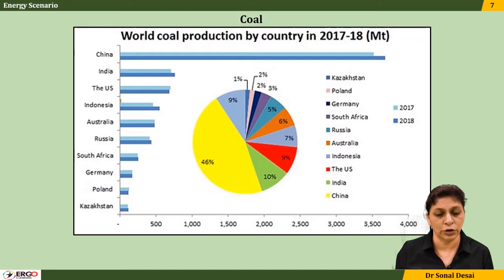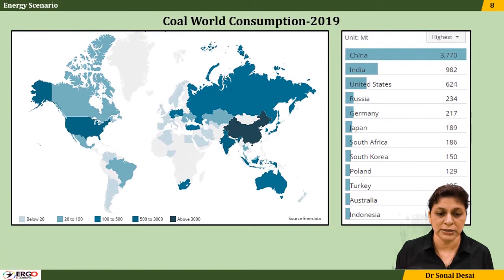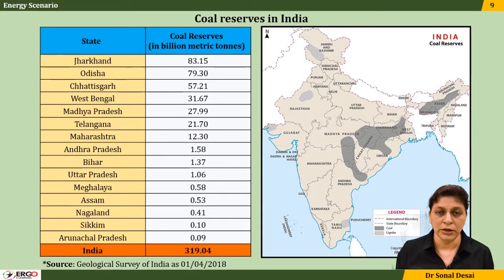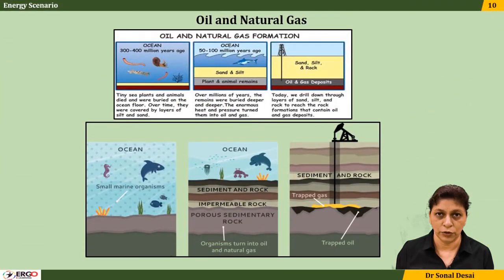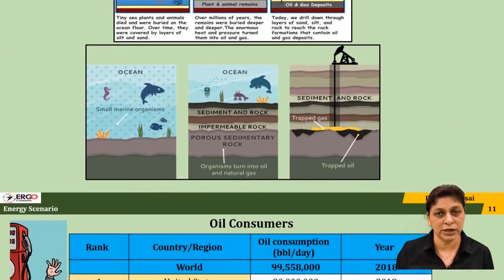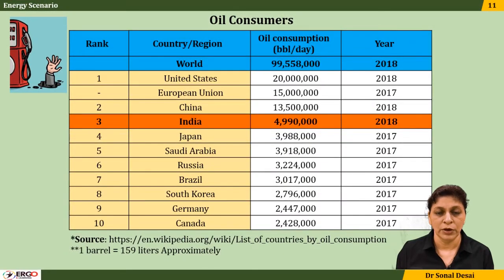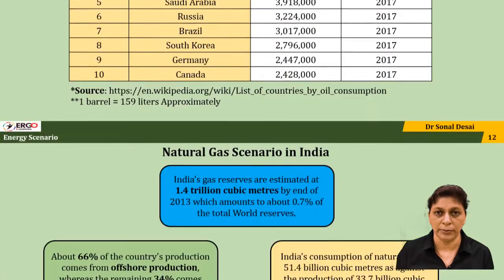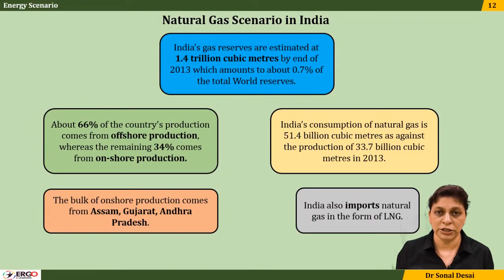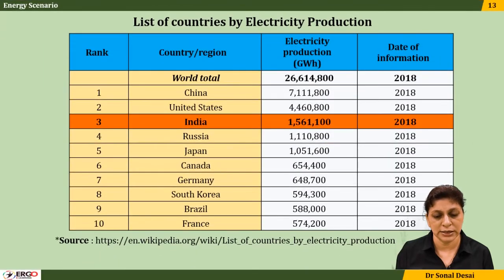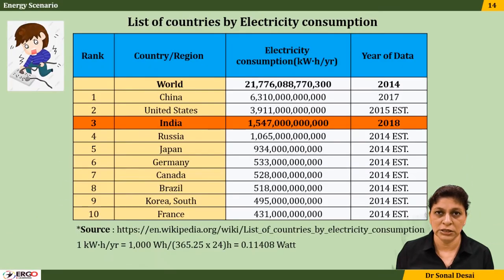For coal, where India stands on the world map for coal production is discussed, along with a world coal map and India's coal reserves. Similarly, oil and natural gas scenarios are covered — oil consumption of different countries is compared, and natural gas production rates and imports are discussed. A list of total electricity produced by all major countries is also presented.